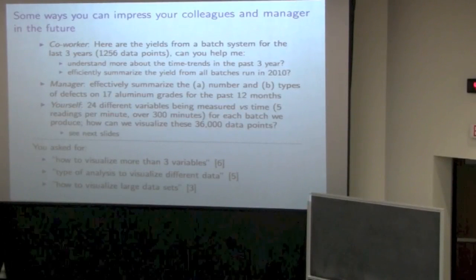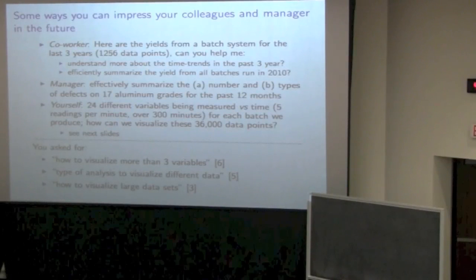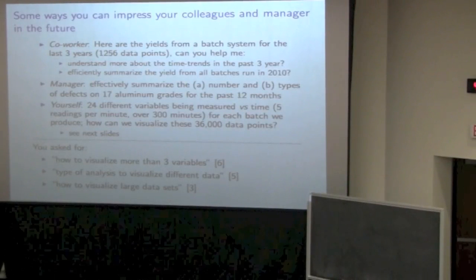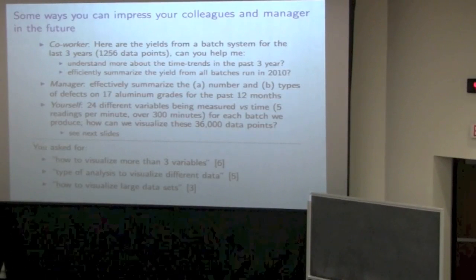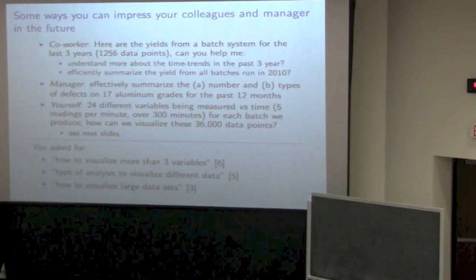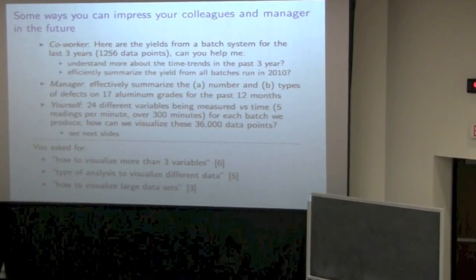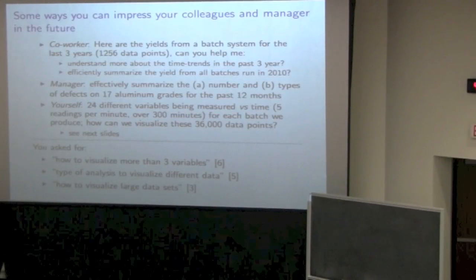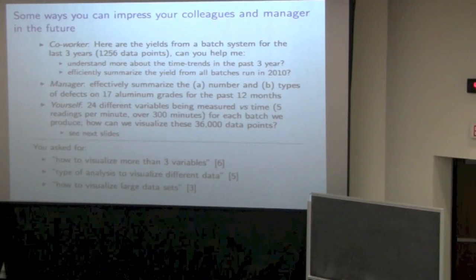And then how to visualize large data sets. Well, let's take a look up here. Here, one of the first questions is your co-worker might be asking you, what about this yield data in the batch system? So a single variable in every batch you can calculate the yield. And you've got that for three years of data. Summarize the time limit. Okay, what type of plot do we use for this?